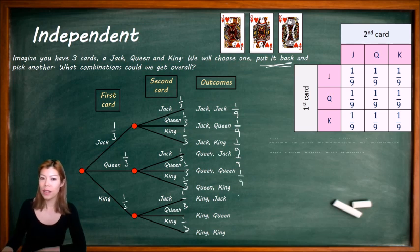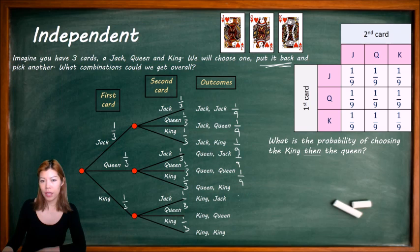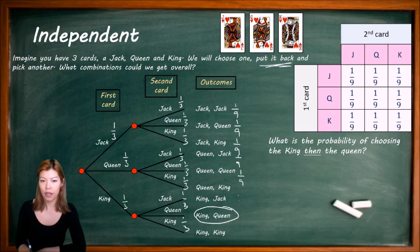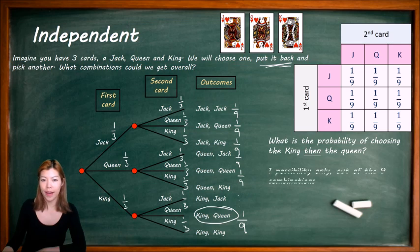For example, we could ask: what is the probability of choosing the King and then a Queen? Going down the tree, we get 1 over 9, because it's one possibility out of the 9.